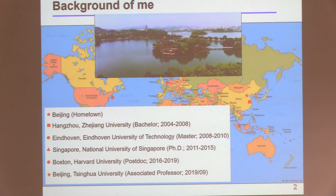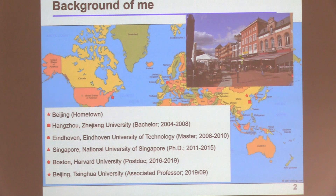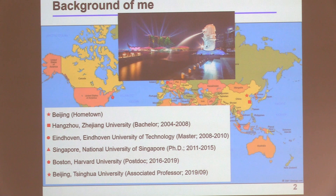I did my bachelor at Zhejiang University, then moved to the Netherlands and did a two-year master there. At the end of my master I happened to meet Chris, and he brought me on a long journey to Singapore, where I did a roughly five-year PhD program at the National University of Singapore. There I started working on molecular electronics using EGaIn junctions.